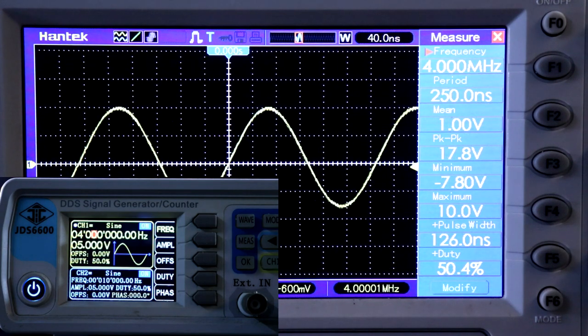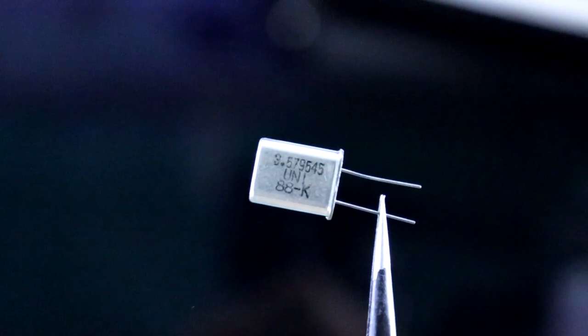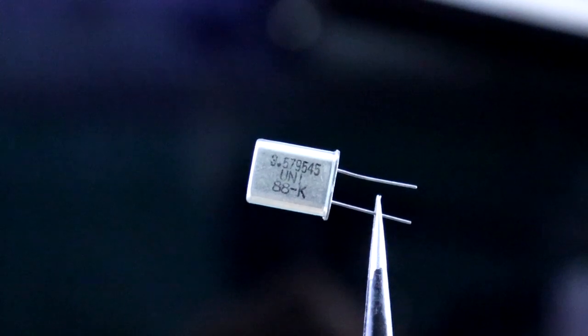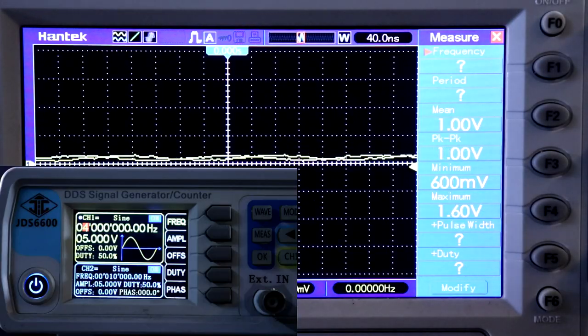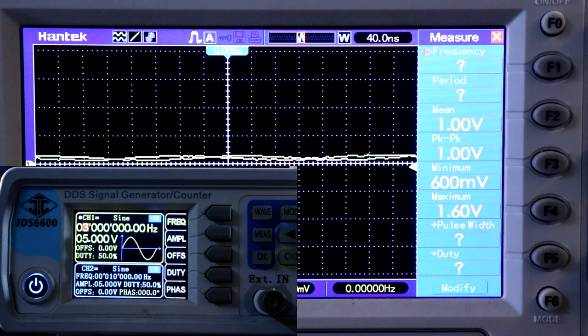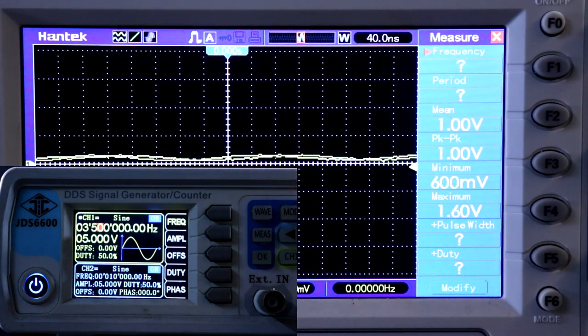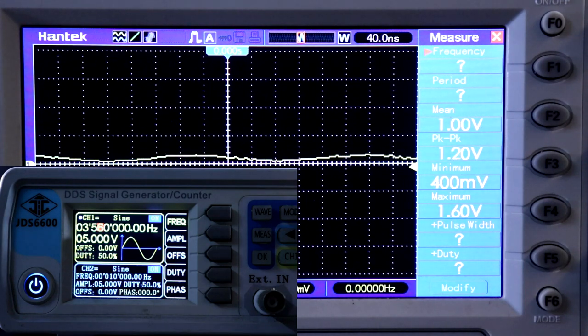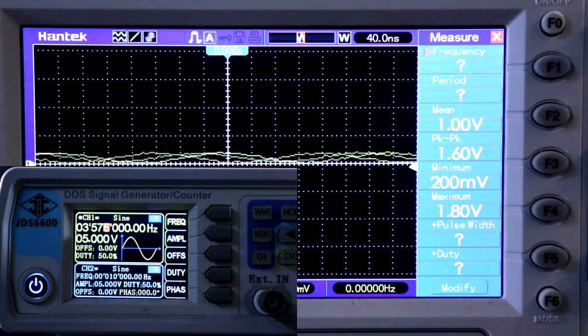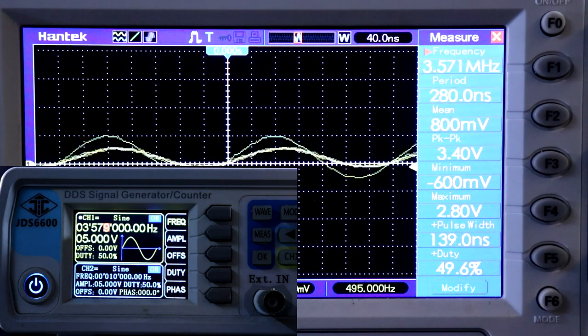Now I am trying another oscillator. Here it is 3.579545 MHz. Now you can see here, 3.579545 MHz.